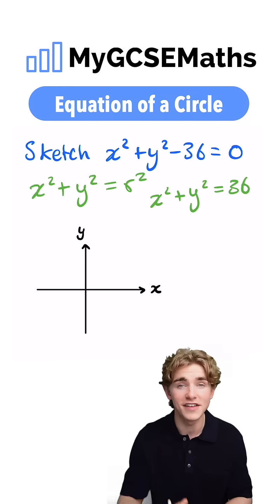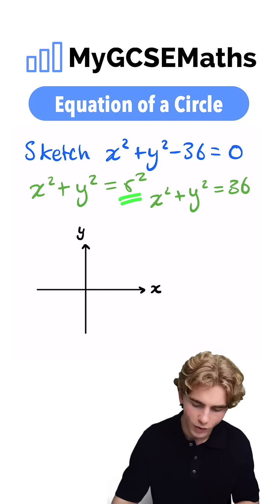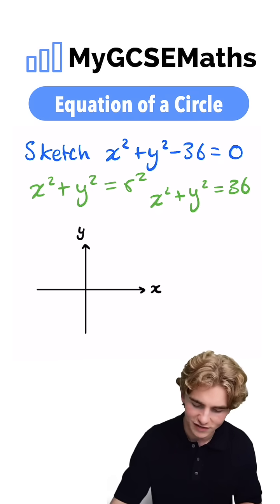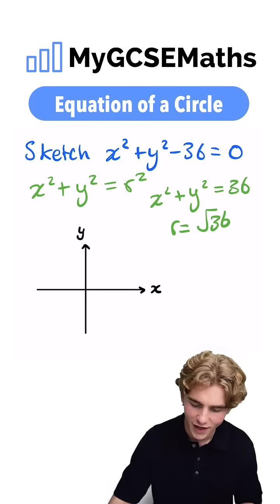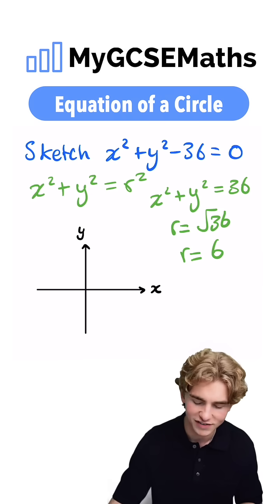Now we can see that this is a circle where r squared is equal to 36. That means that r is going to be equal to the square root of 36. The radius of our circle is going to be 6.